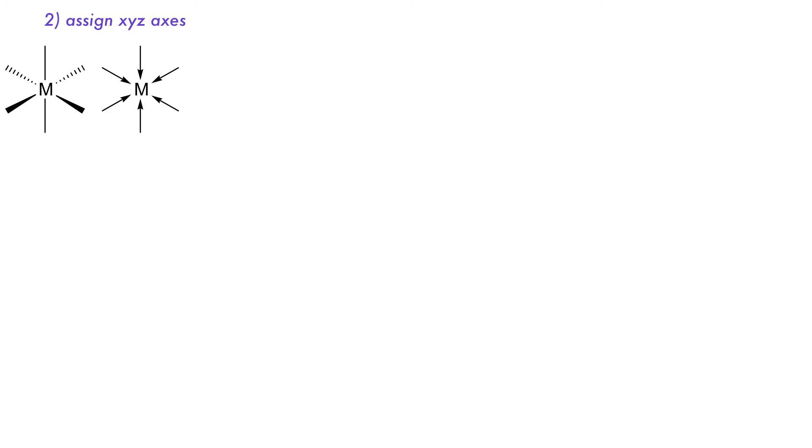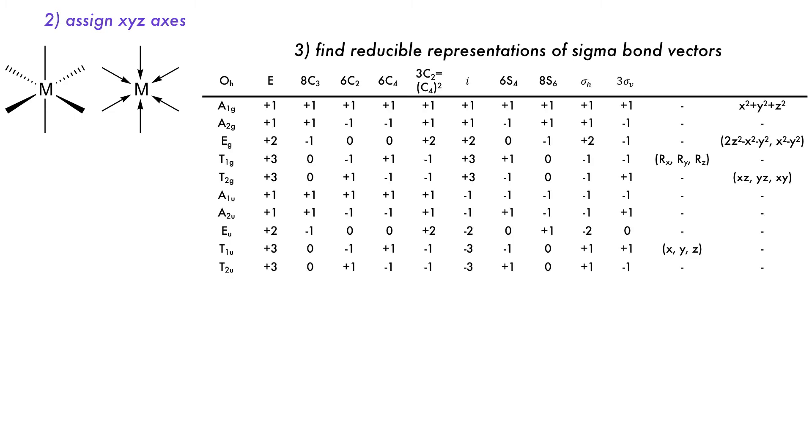Here are the ligand metal sigma bond vectors, and by using the character table for the octahedral point group can be used to find the reducible representation for the sigma bond vectors, giving this sub-sigma table.